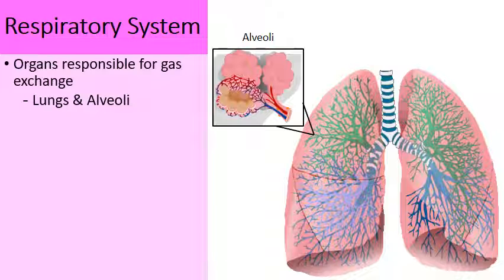The main organs would be the lungs, and inside of the lungs, thousands and thousands of clusters of air sacs known as the alveoli.